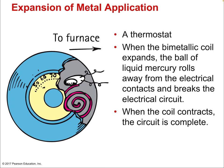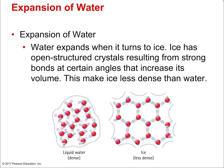In a thermostat, when the bimetallic coil expands, a ball of liquid mercury rolls away from the electrical contacts and breaks the circuit. When the coil contracts, the circuit is complete. We'll talk about electrical circuits in a later chapter.